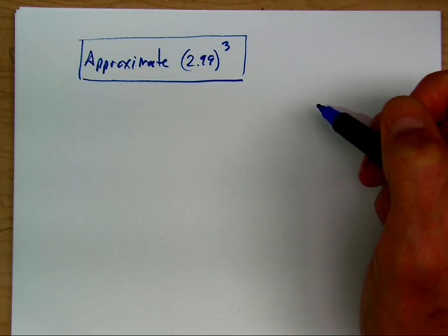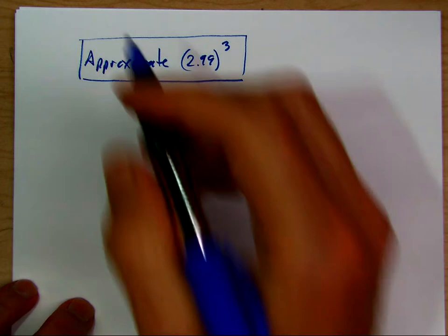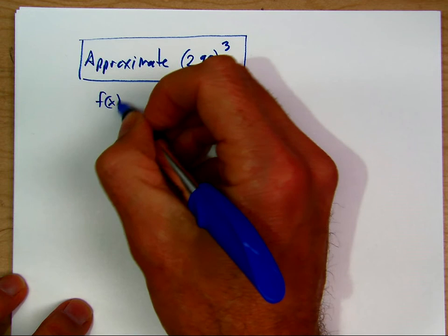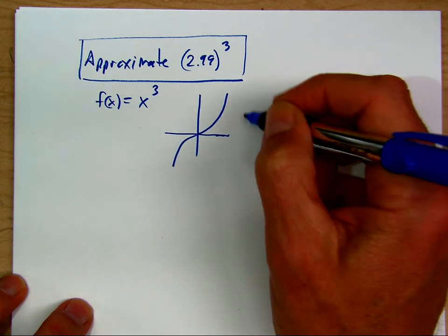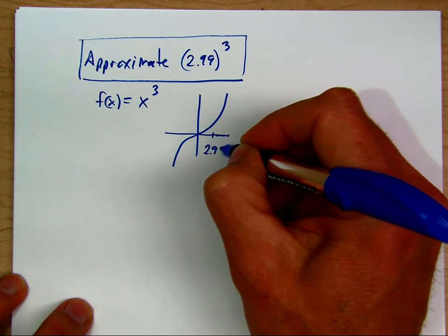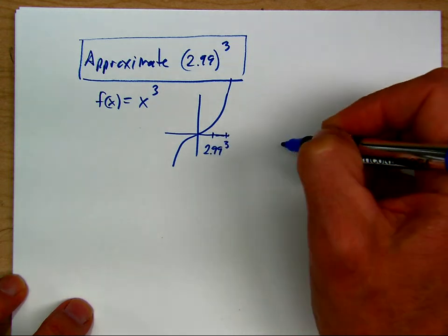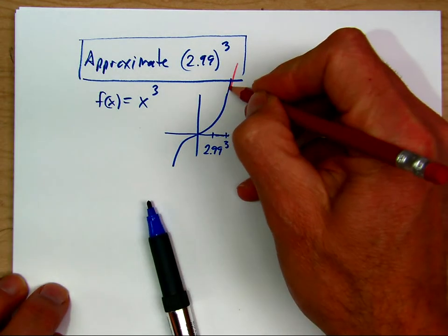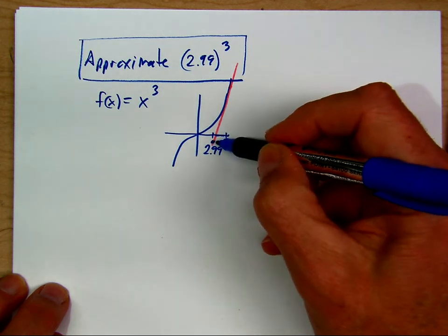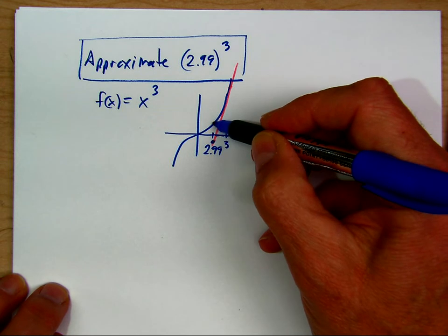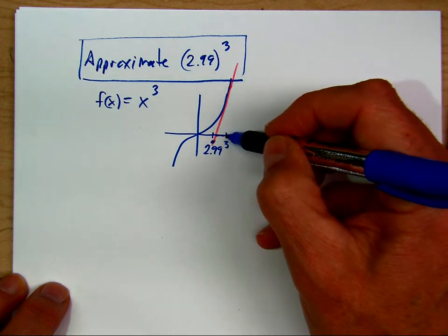Now approximate 2.99 cubed using a tangent line. We're looking at f of x equals x cubed. We're trying to find the y value at 2.99. We'll choose a number close to 2.99 — let's choose 3. At 3, we'll make a tangent line, find the y value of the tangent line, and say that it's approximately the y value of the function. We're going to draw a tangent line at x equals 3 and find its value at 2.99.